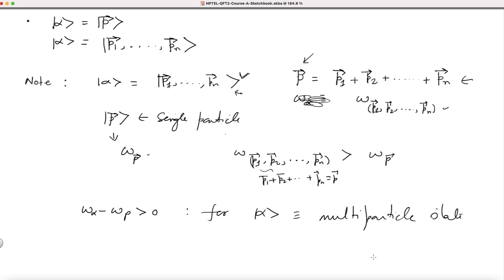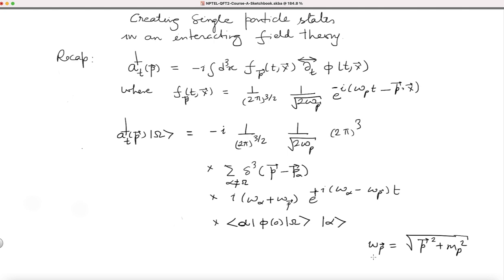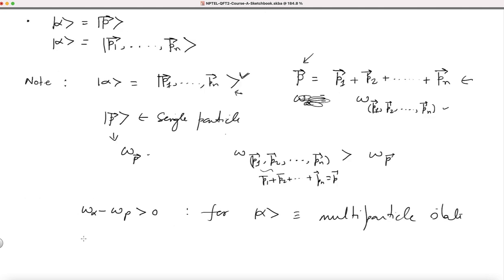So we have omega alpha minus omega p. Now I want to get rid of all the multi-particle states, and I can do so by choosing t appropriately. I will choose t such that this exponential factor provides the damping and kills the entire contribution.